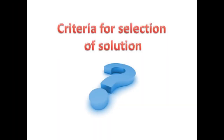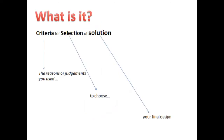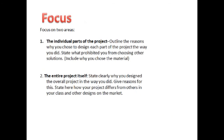Criteria for selection of solution — first of all, let's look at what it is. It is the reasons or judgments you used to choose your final design. You are to focus on two areas: the individual parts of the project, outlining reasons why you chose each design part compared to the other design solutions you found, and likewise for the entire project itself.